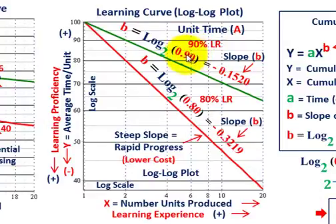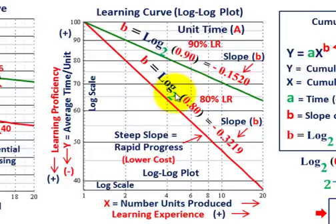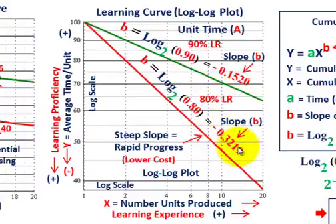For the red line — the 80% learning rate — b equals log base 2 of 0.80, which gives us a slope of minus 0.3219. That's a negative slope, always sloping downward. The 90% learning rate has a lesser slope of minus 0.1520 versus the 80% learning rate at minus 0.3219. The steeper negative slope of 80% indicates faster improvement.